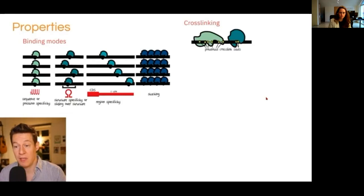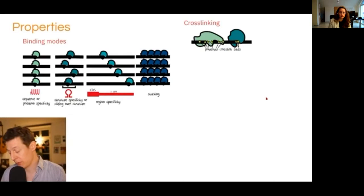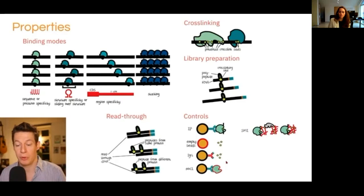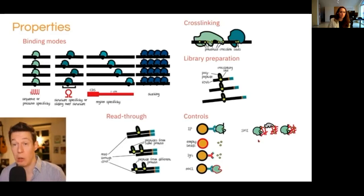We also have technical complications. Crosslinking is quite inefficient — less than 1% probability that the crosslink will actually happen. Then there are read-throughs where the reverse transcriptase doesn't stop, different properties in library preparation, and different controls. The controls are quite important. Most of you know IgG controls, especially for ChIP-seq. But here in eCLIP we use SMIs — the size-matched input controls — which our method really uses.